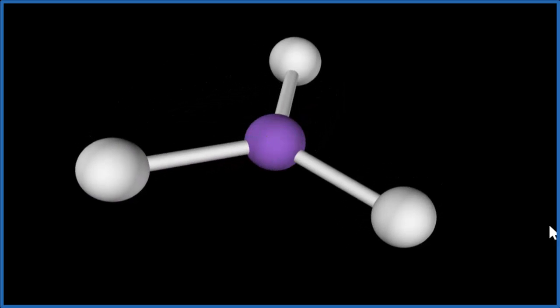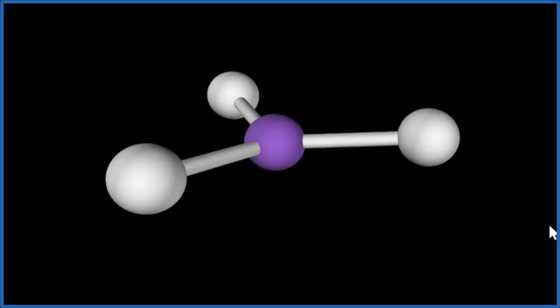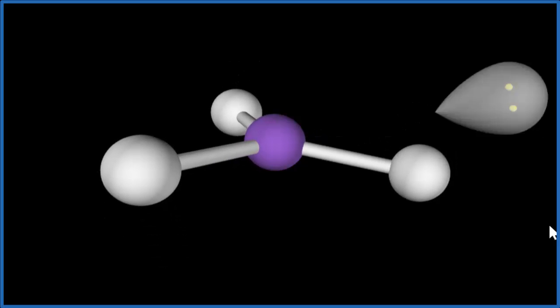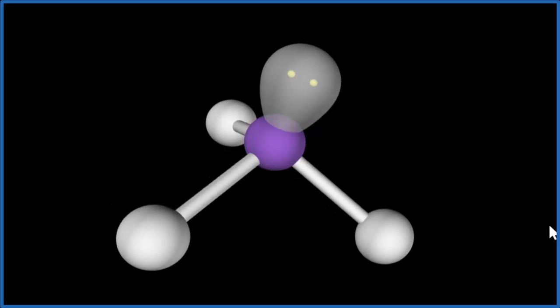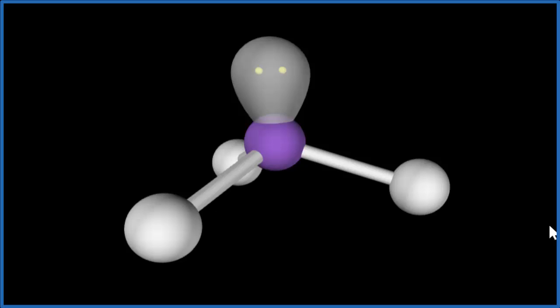Right now, they're in a plane. So we have what's called a trigonal planar molecular geometry. But remember that lone pair. It occupies space. And when we add the lone pair, it forces the hydrogen atoms down. We end up with what's called a trigonal pyramidal molecular geometry.